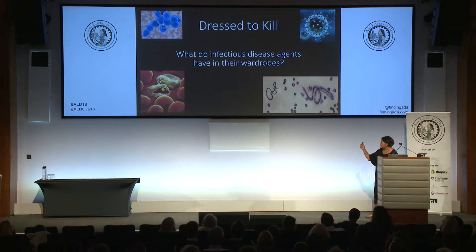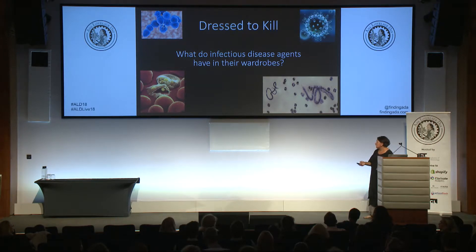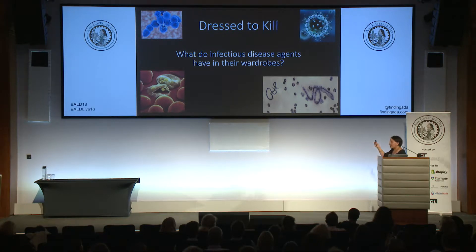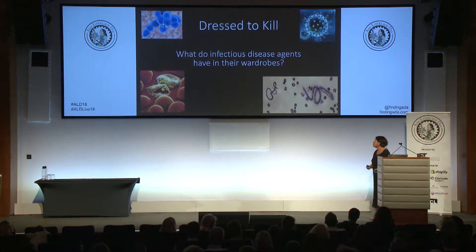The malaria parasite is responsible for one of the most important killers, mainly of young children, and spends a considerable part of its lifespan within the red blood cell. And finally, somewhat larger, is the filarial worm, which is also vectored by a mosquito, just like malaria. It's small enough to do that, but still quite large, particularly in comparison with the influenza virus.